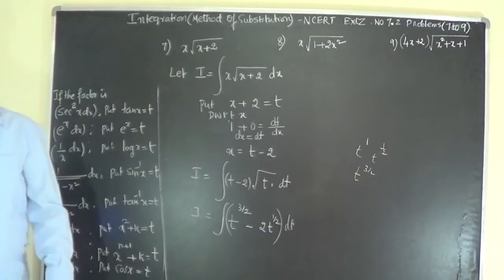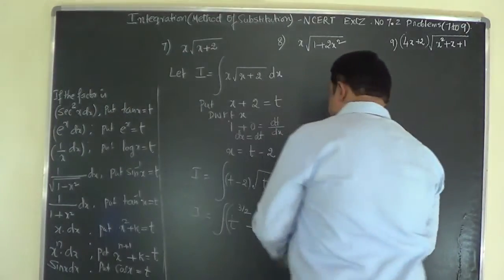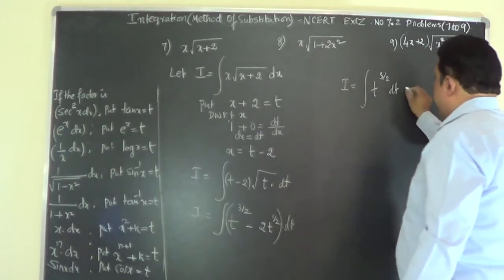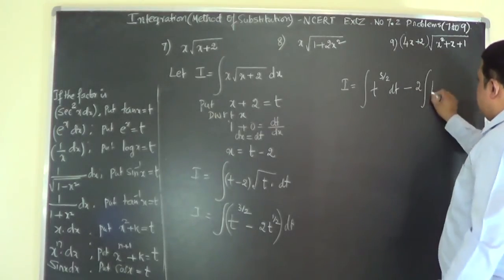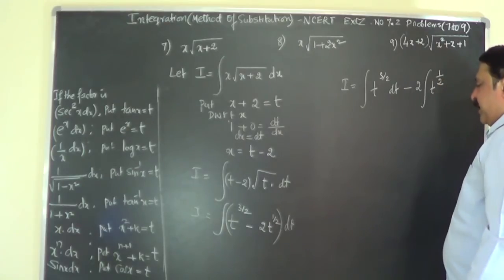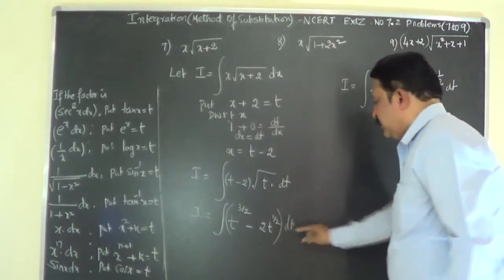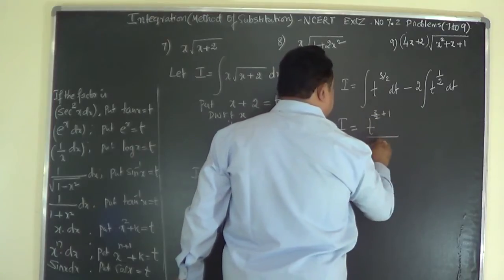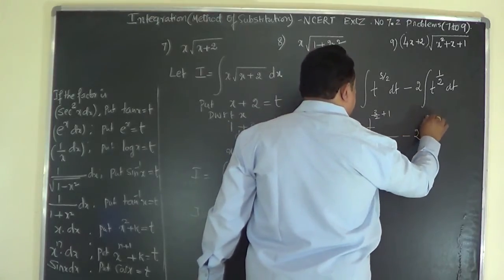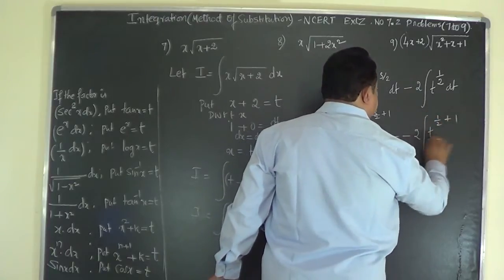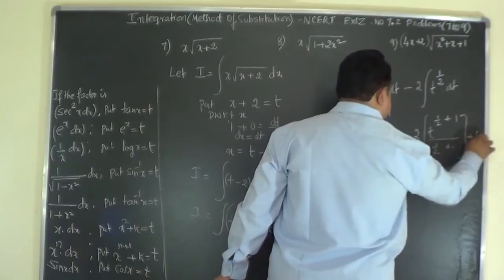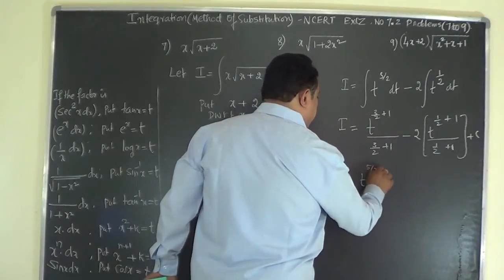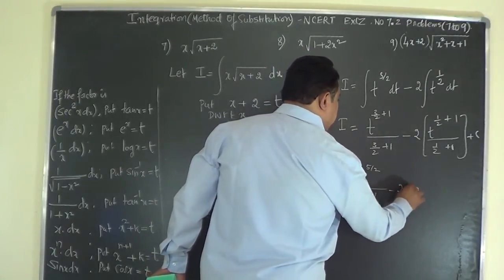Separating the integral: I equals the integral of t^(3/2) dt minus 2 times the integral of t^(1/2) dt. Integrating using the power rule: I equals t^(3/2 + 1) over (3/2 + 1) minus 2 times t^(1/2 + 1) over (1/2 + 1) plus C. That gives t^(5/2) over (5/2) minus 2 times t^(3/2) over (3/2) plus C.